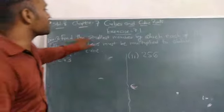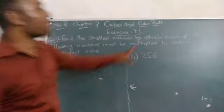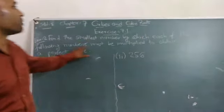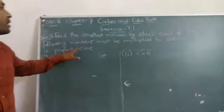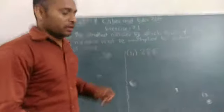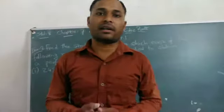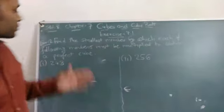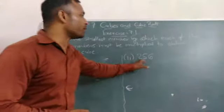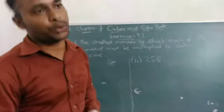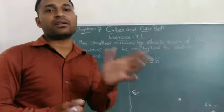The question is, find the smallest number by which each of the following numbers must be multiplied to obtain a perfect cube. This type of example we discussed in the previous chapter. Now, your example is 243 and 256 are not perfect cubes, but to make them perfect cubes, we multiply some numbers.